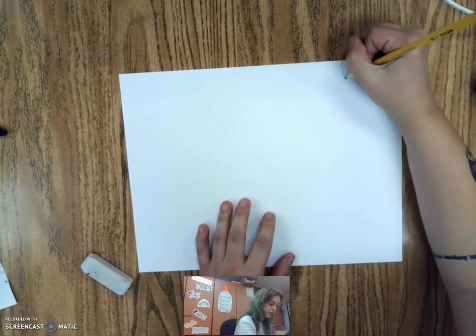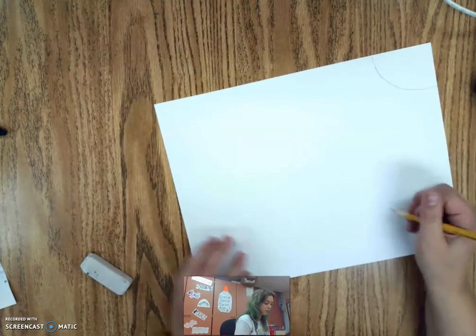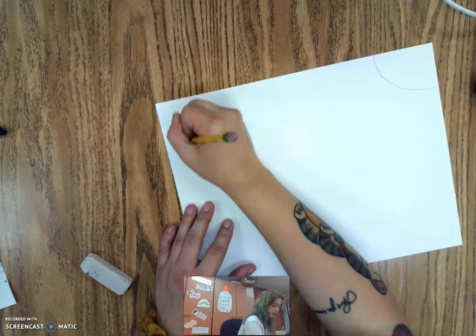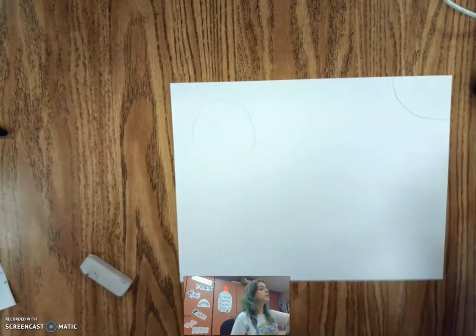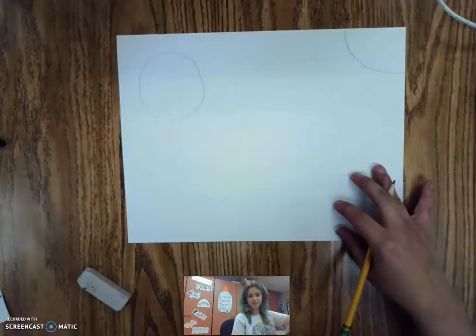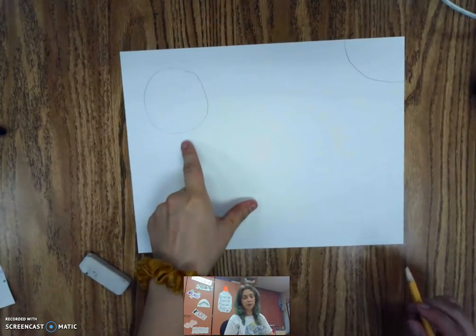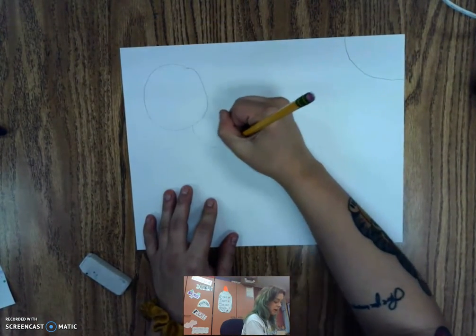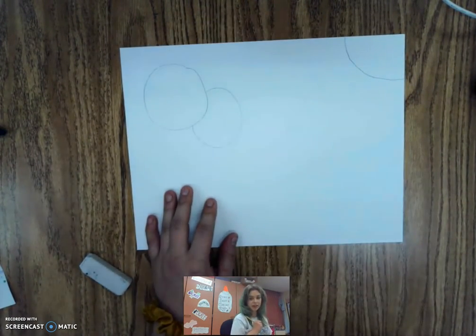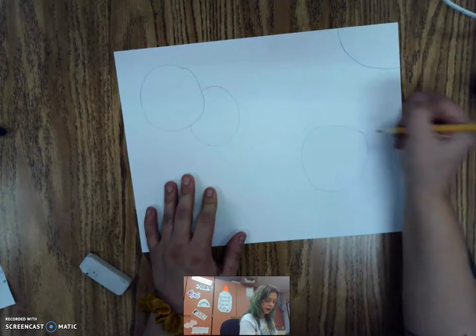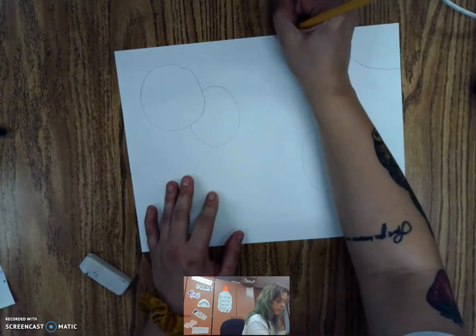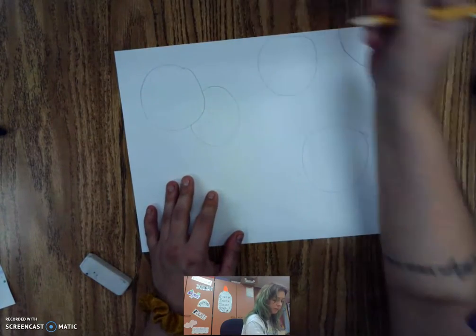So what you want to do is start filling up your paper drawing some circles and you can have some overlap like maybe I'll have a bubble right here. Let me turn down the lighting. Maybe I'll have a bubble right here and then behind it I'll add another one like that. And then you don't have to fill up your entire paper but you want it pretty filled up. You kind of want it filled with bubbles.